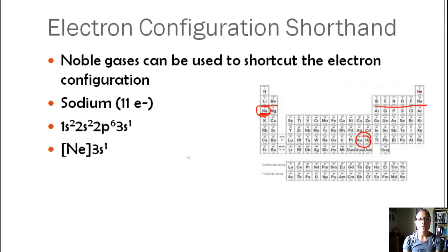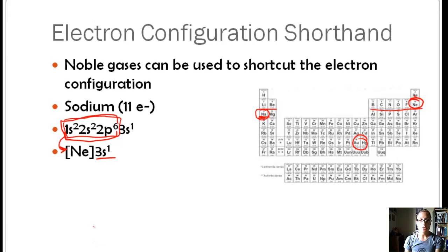We can use noble gases to shortcut that electron configuration. If you take a look at neon, neon is right before sodium, 1s2, 2s2, 2p6 is neon's electron configuration. Instead of writing this whole quantity, we can just put that noble gas in brackets and then continue on with our electron configuration. Keep in mind that only noble gases can be used to shortcut.